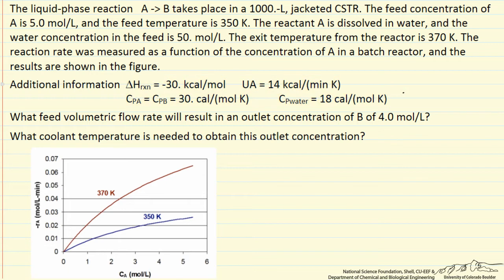So we have two questions we want to answer. What volumetric flow rate in the feed will result in an outlet concentration of B of 4 moles per liter, and then what coolant temperature do we need to obtain this outlet concentration, which corresponds to converting 80% of A to B.